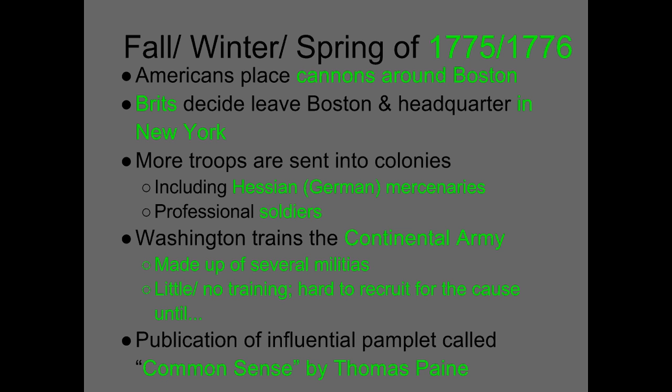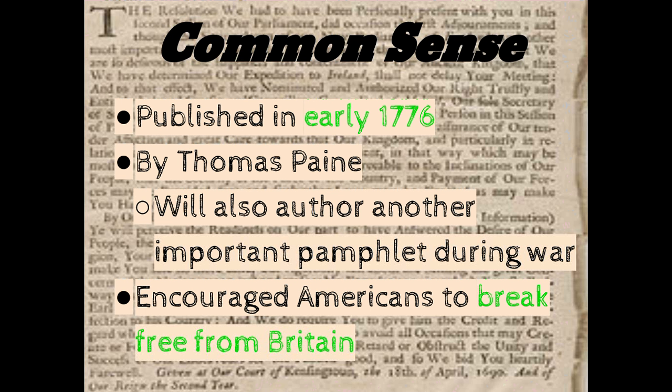In the fall and winter of 1775 and into the early part of 1776, Americans start to place cannons around Boston. Britain decides to leave Boston and headquarter in New York, giving up the area to colonial troops. More troops are arriving, including Hessian mercenaries out of what's now Germany — professional soldiers. Washington is training up his Continental Army, made up of several different militias with little to no training. It was hard to recruit for the cause until a pamphlet called Common Sense was published by Thomas Paine.